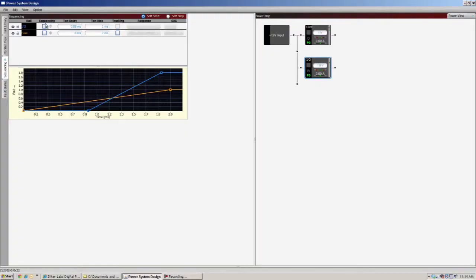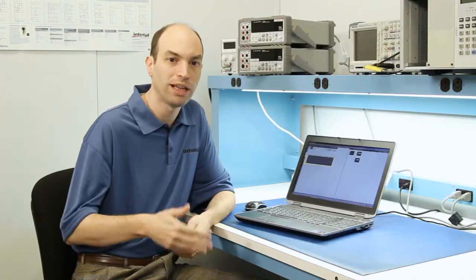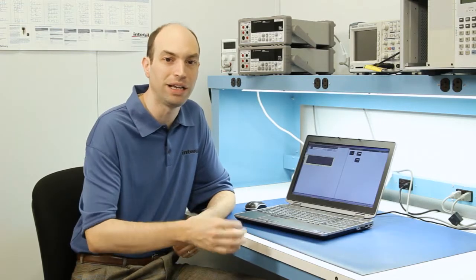The next box is the sequencing box. Now automatically you are sequencing everything from a time-based standpoint. But one of the benefits of the digital power devices is a DDC bus that links every single one of the products. This allows you to have event-based sequencing.